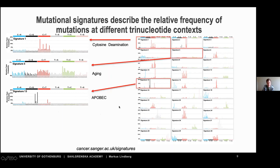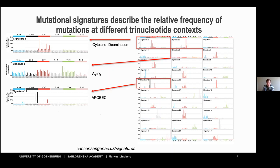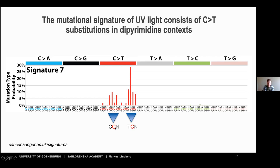The signature we are most interested in for the first paper is signature 7 — the mutational signature of UV. It generates almost exclusively C-to-T mutations in dipyrimidine contexts (CC or TC), where the last nucleotide is less important. This pattern is well understood: UV generates CPDs (cyclobutane pyrimidine dimers) — a covalent bond between adjacent pyrimidines. When the second nucleotide in the CPD is a cytosine, it deaminates rapidly and becomes a T after replication.